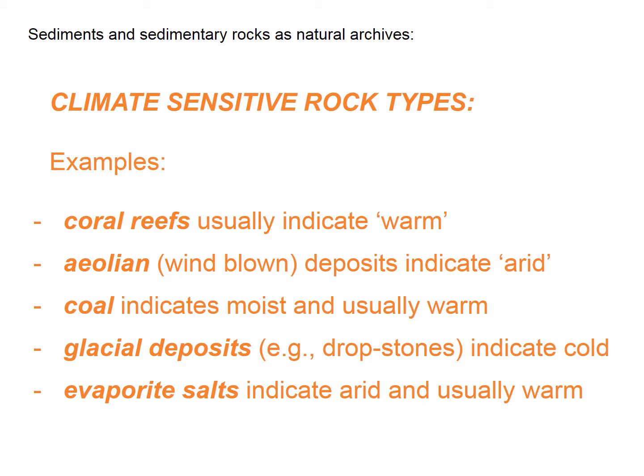Some quick examples of climate-sensitive rock types. If you find a fossil coral reef, you could say coral reefs nowadays grow in warm tropical places, so probably a warm tropical place. But it's not necessarily true - it might be that different kinds of corals in deep geological time survived under different environmental conditions. It might be that actual corals in the past could have survived in cold water, so we need to be a bit cautious.